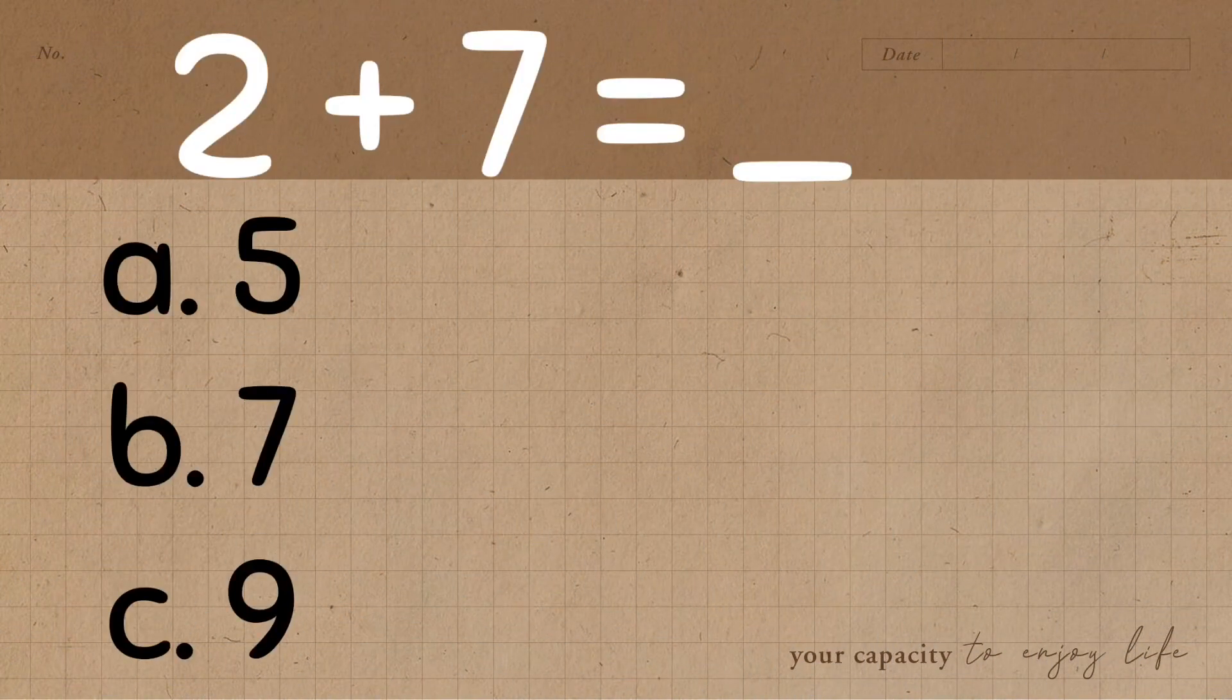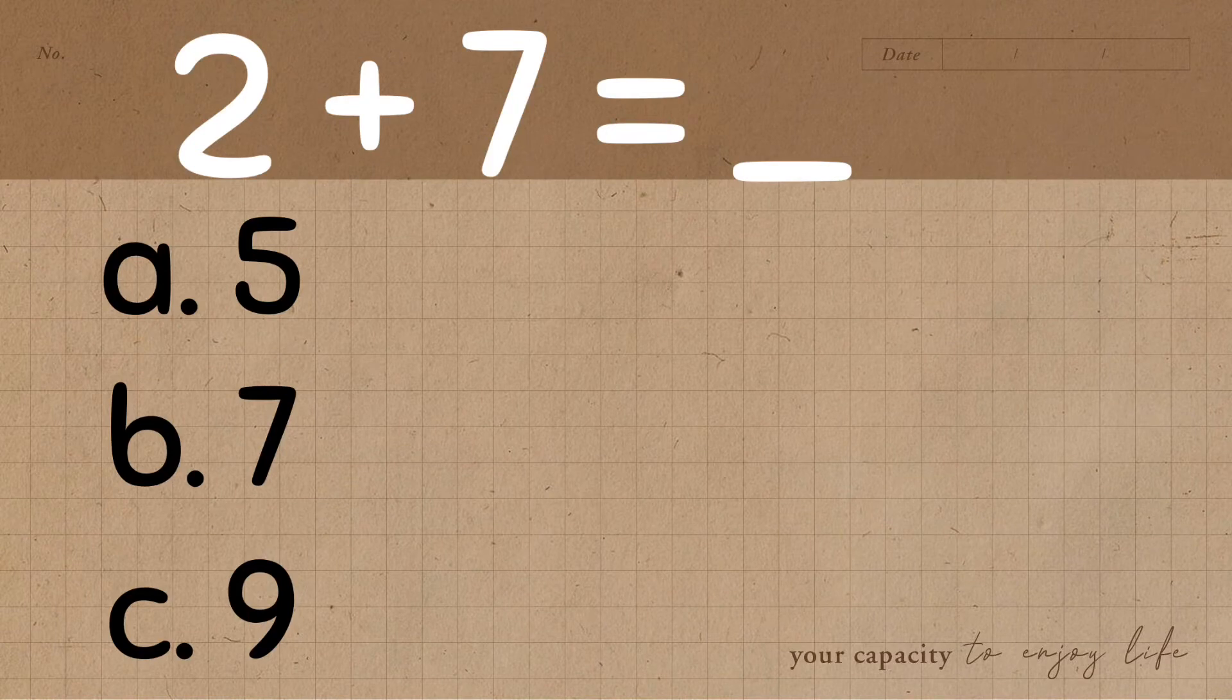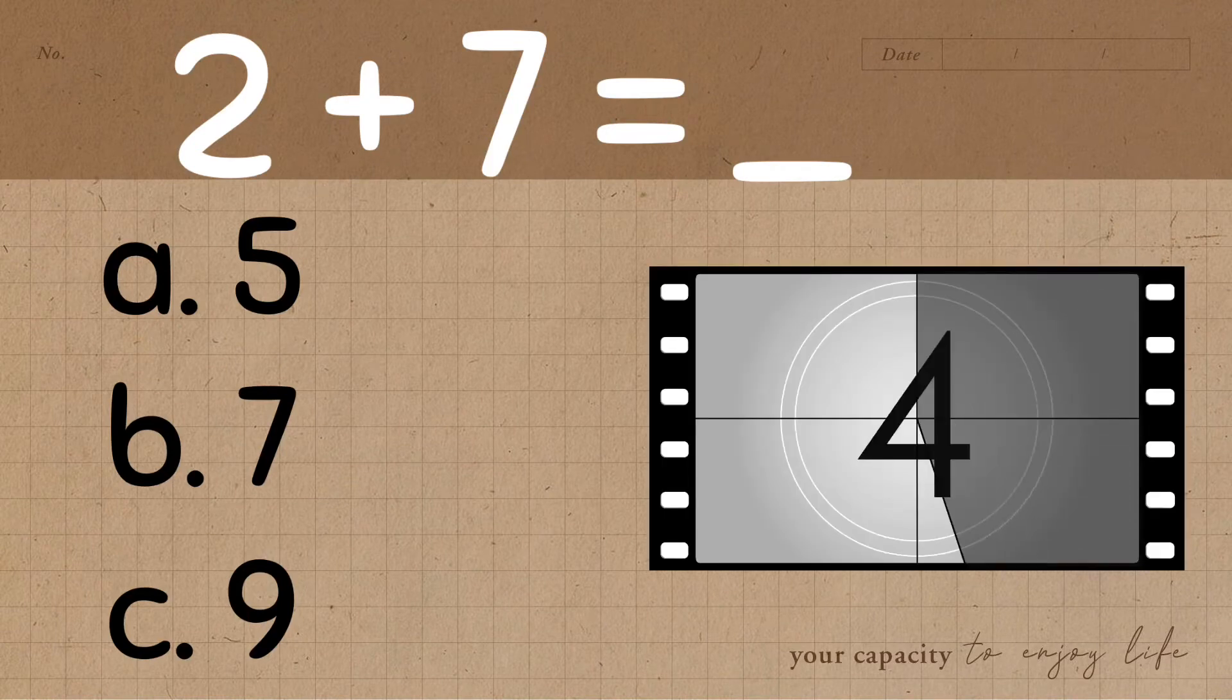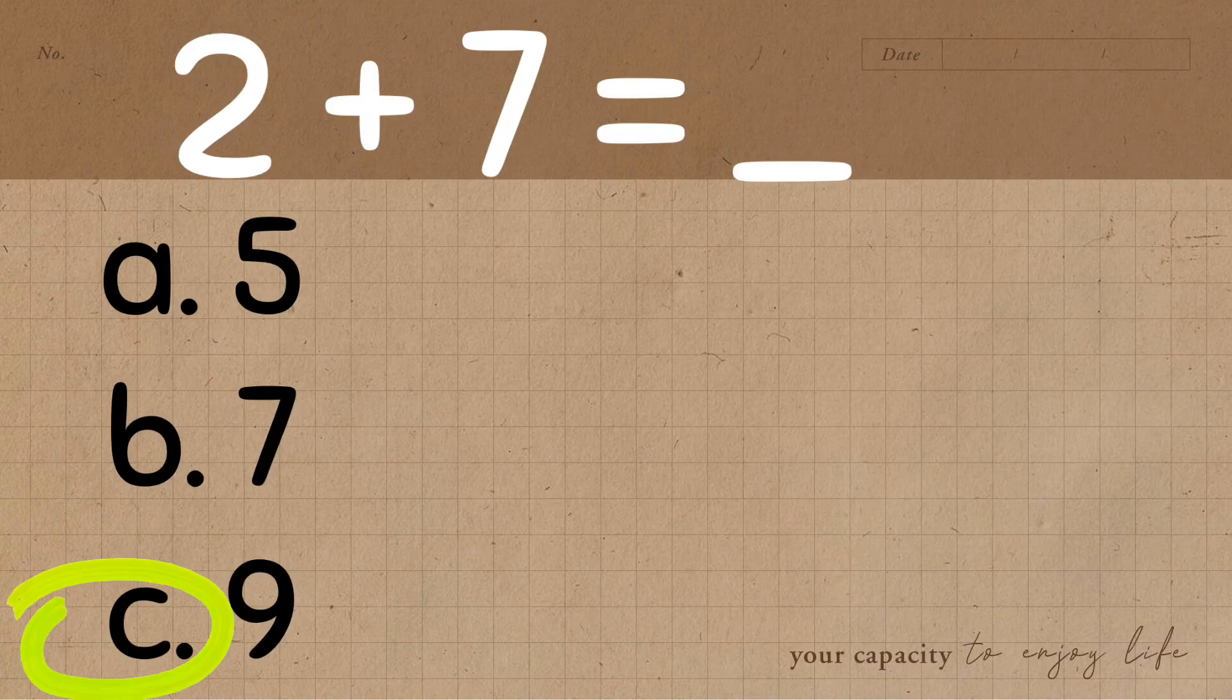2 plus 7 is equal to blank. Is it A, 5, B, 7, or C, 9? The correct answer is C.